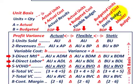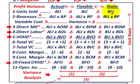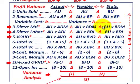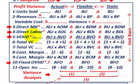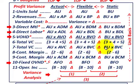Looking at our static budget and how we'd set that up: units sold is just some budgeted units. Revenues would be budgeted units times budgeted prices. For variable costs — direct material, direct labor, and variable overhead — you take whatever budgeted units you have times the budgeted unit price for each of those. You can also look at total variable costs on a per unit basis: budgeted units times budgeted variable cost per unit.